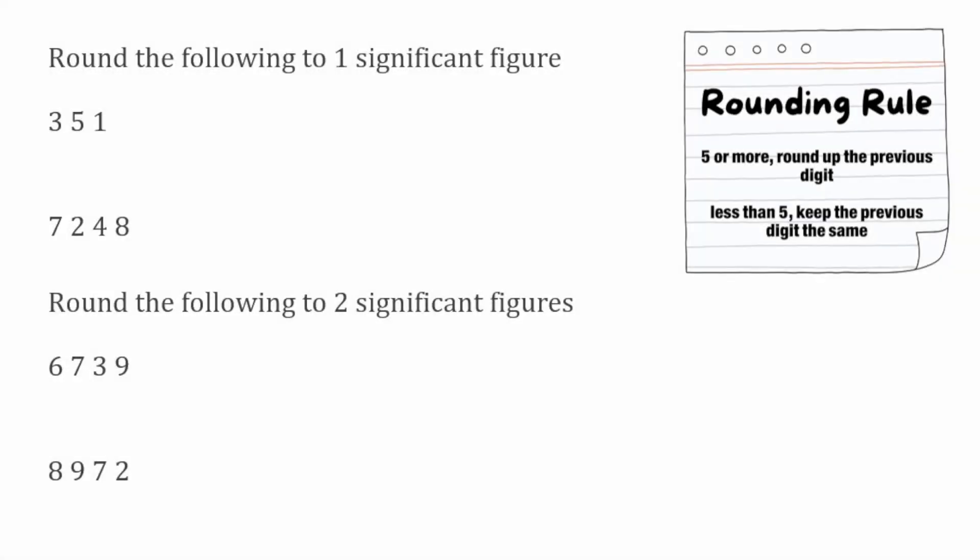In this video, we're taking a look at rounding whole numbers to different amounts of significant figures. If you want to check out any other rounding videos before carrying on with this one, I'll put some links to them in the description and also a card in the top corner. For this first set of questions, we're just looking to round to one significant figure. To find our first significant figure, we're looking for the first digit that isn't a zero.